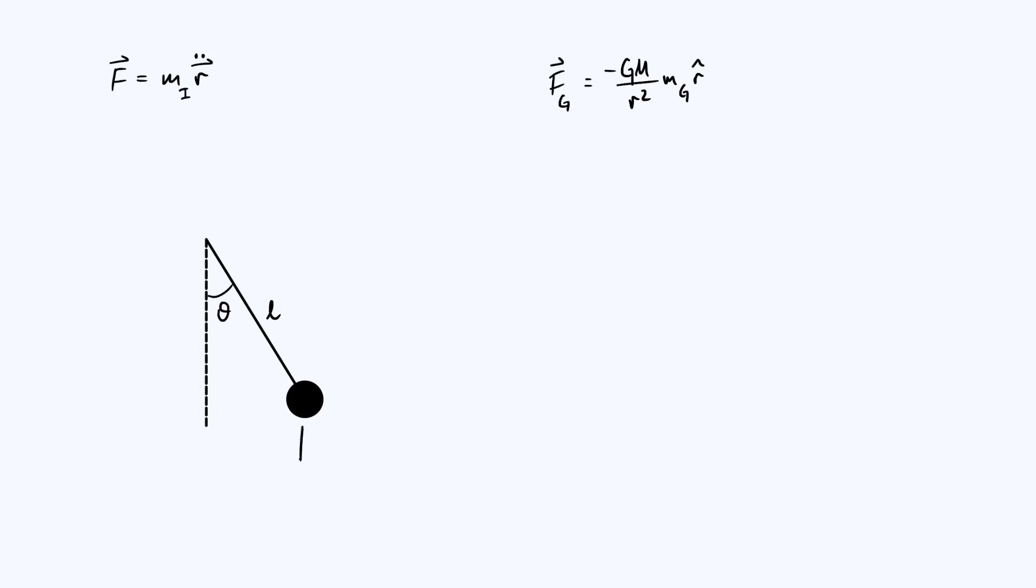There is the weight acting down, and that's going to be m times g, where lowercase g is the gravitational field strength. But this is really m subscript g, the gravitational mass. There'll be some kind of tension in the rod or string pulling it up and to the left.